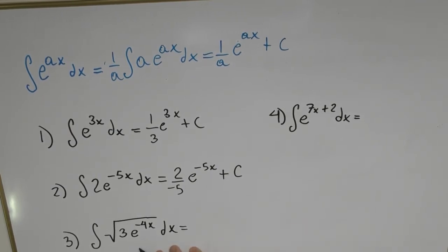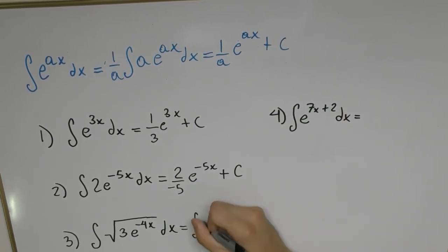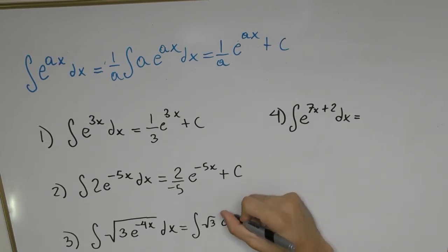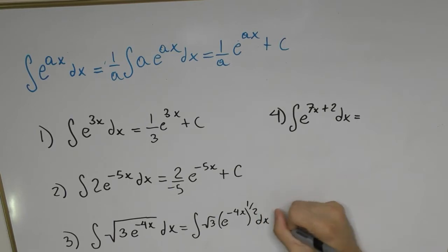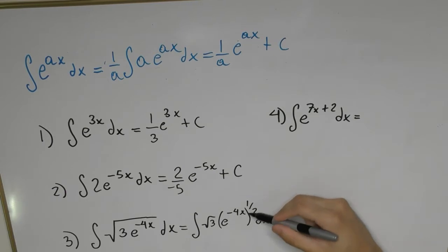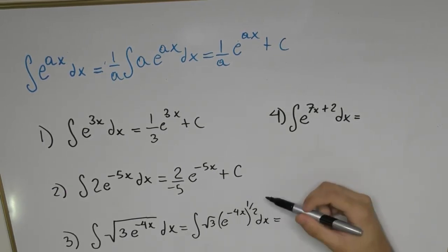What about a function like the square root of 3 times e to the minus 4x? First we simplify: the square root of 3 stays, and the square root becomes a power of one-half — that's one of the properties of these functions. Then a power raised to a power is just the product of the two, so one-half times 4 gives us minus 2.